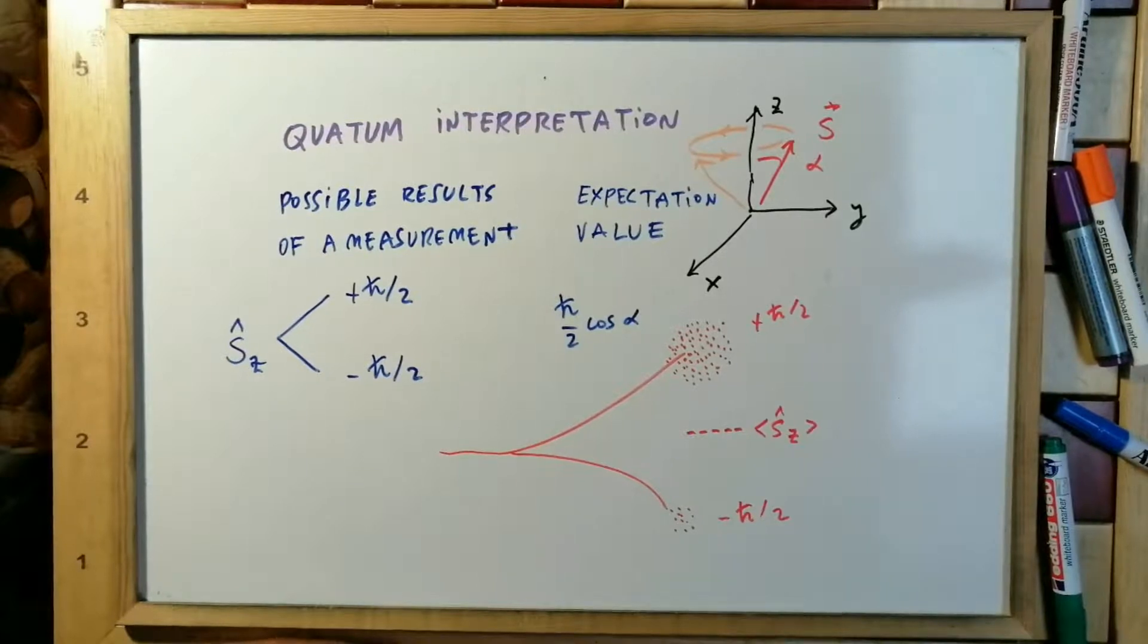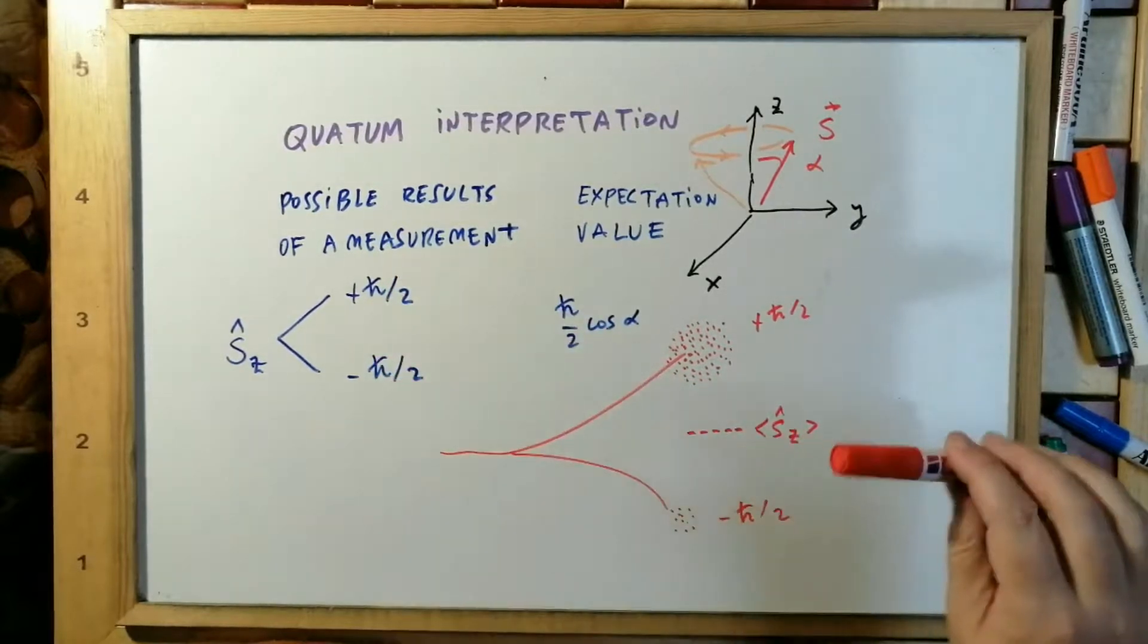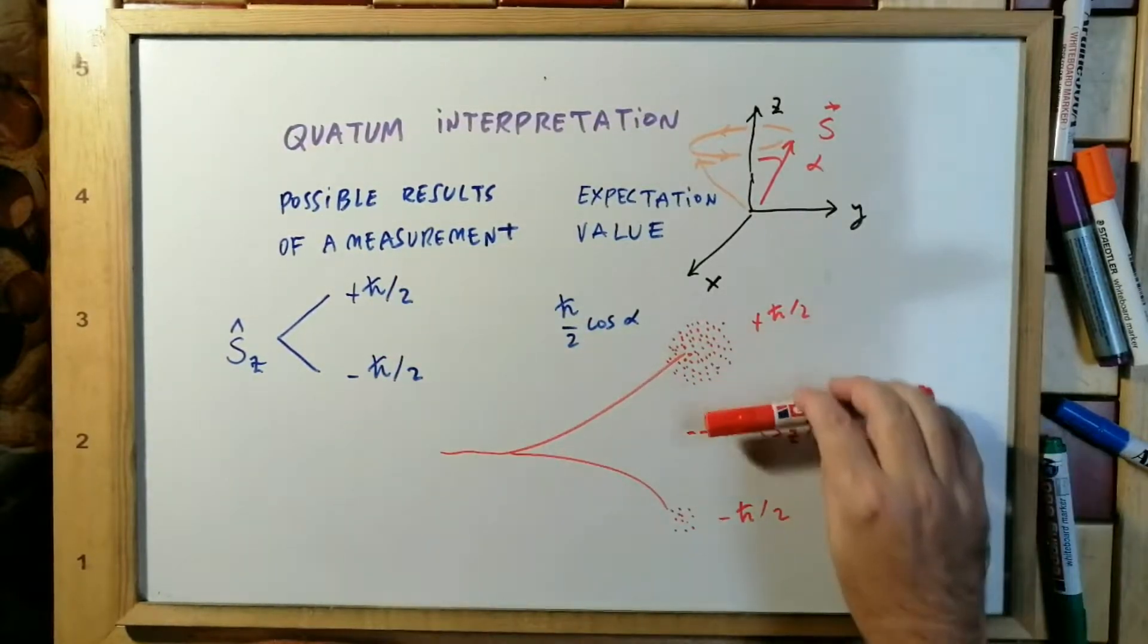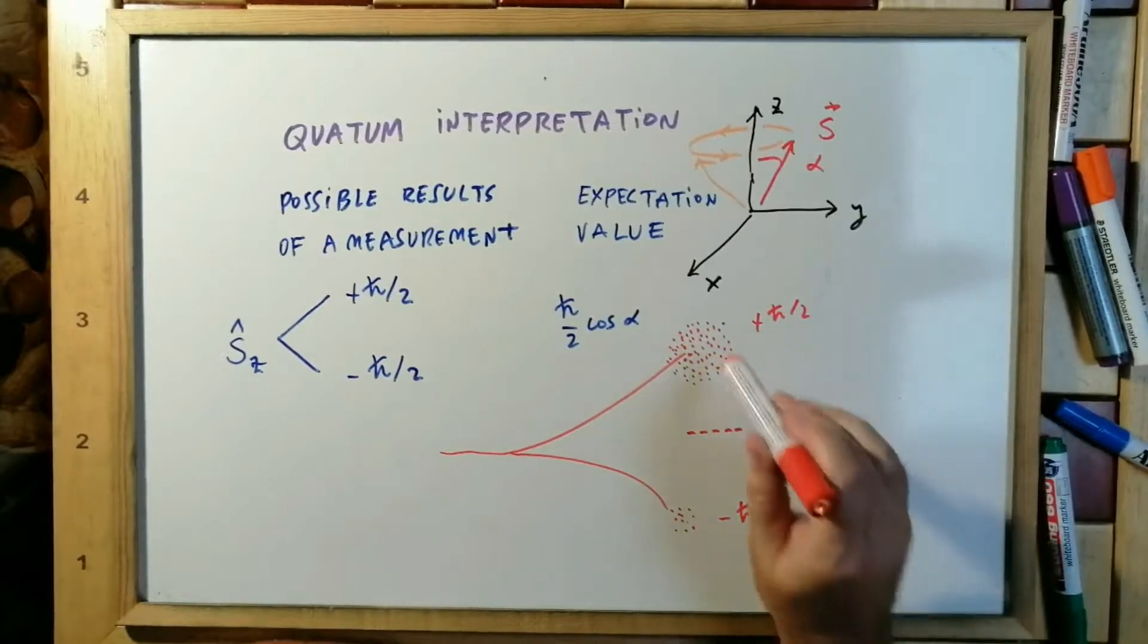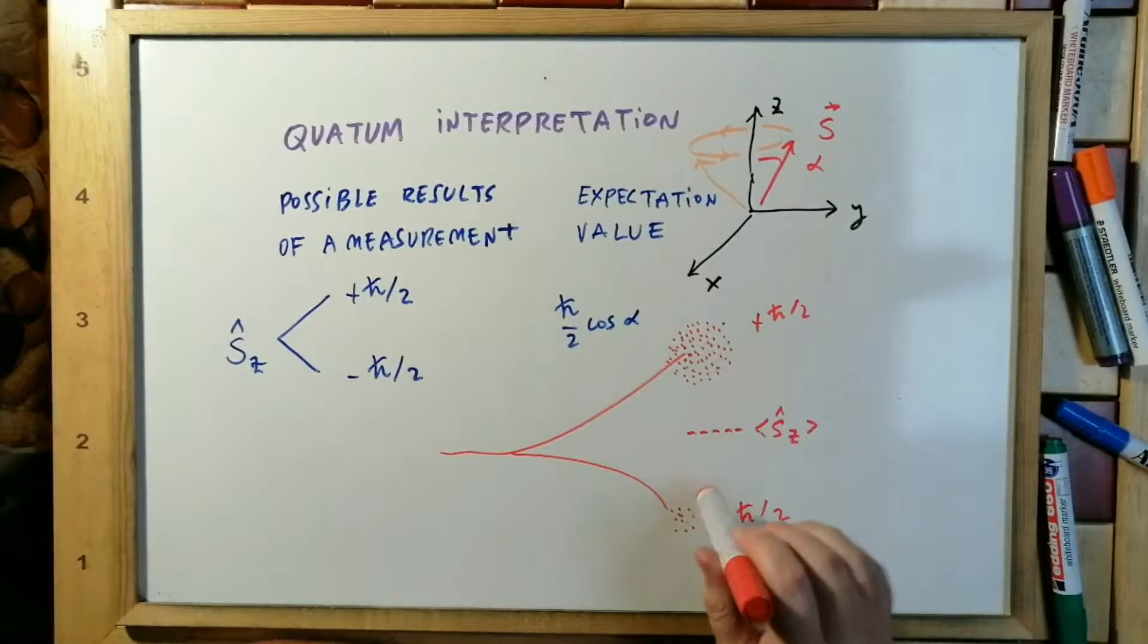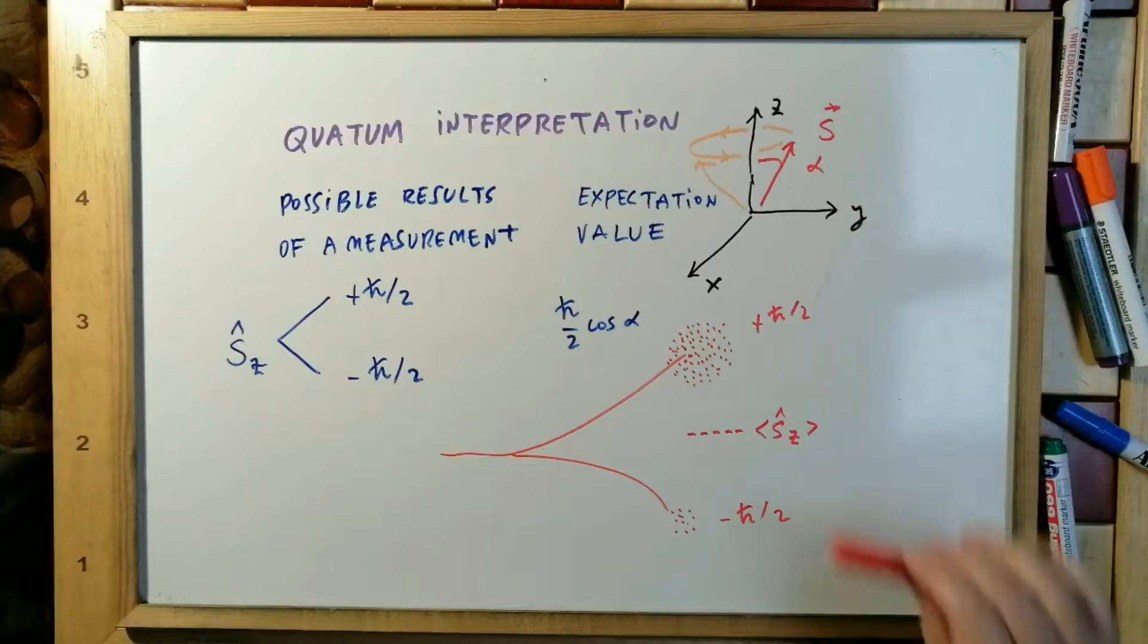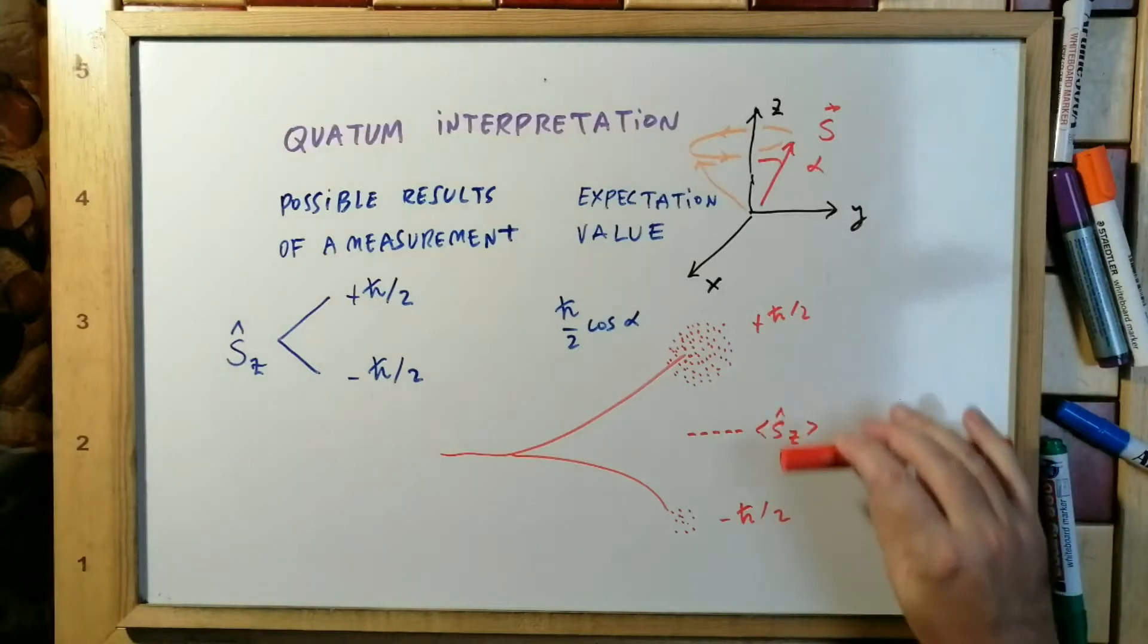However, the only possible results of a measurement are this and this. The expectation value can be here, but the only possible results are this or this. For example, the number of measurements can change the expectation value position, which can be between both values.